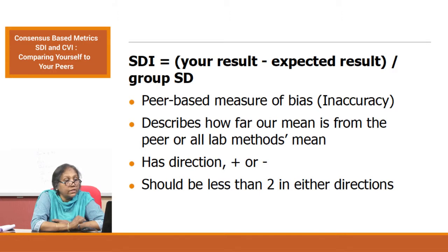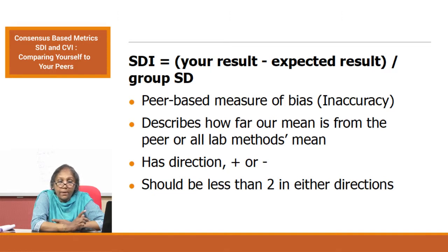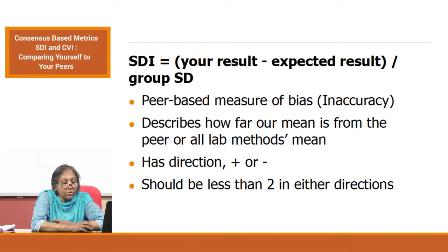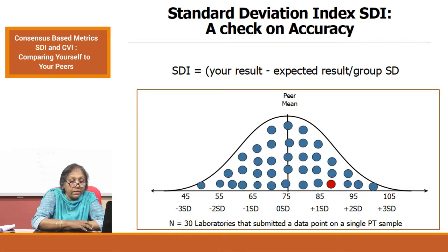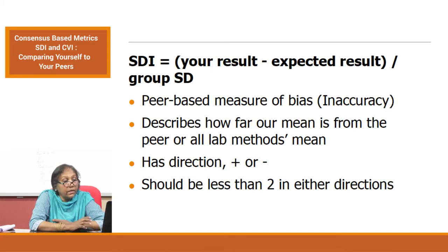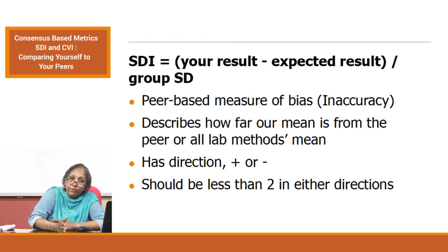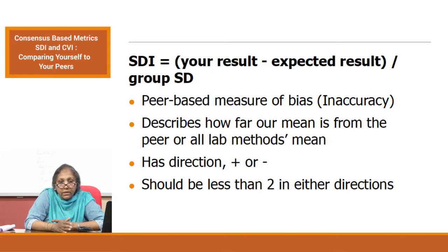The SDI is a peer-based measure of inaccuracy or accuracy — it describes how far your mean is from the peer or all-lab mean, and it has a direction: it can be plus or minus. Ideally, it should be less than 2 in either direction. More than 2 indicates inaccuracy error or buildup of bias. Even above 1, you want to be cautious. If your mean equals the peer group mean, SDI should be 0; any deviation indicates some error worth noting.